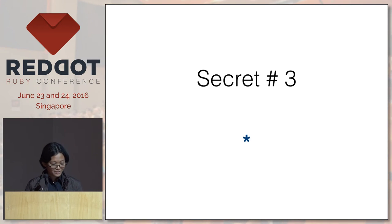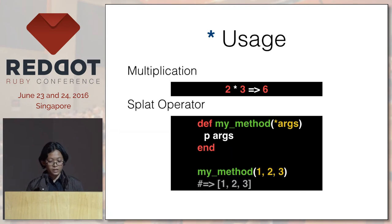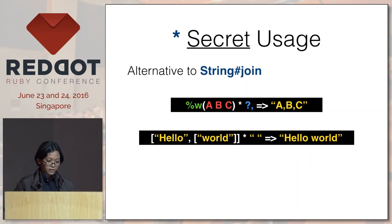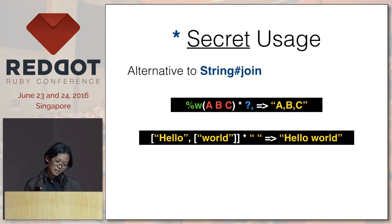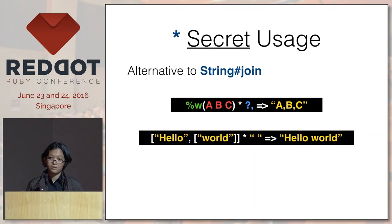Next is the asterisk. The usual usage is for multiplication and the splat operator. The splat operator is usually seen in method arguments — it transforms arguments into an array. Another secret usage of asterisk is it's an alternative to join. At first I thought: why are you multiplying an array by a string? It doesn't make sense. But as I did golf, it started being natural. One character versus four characters — that's a lot.